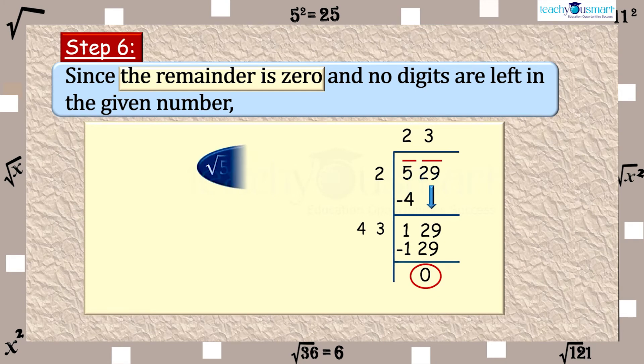Step 6: Since the remainder is 0 and no digits are left in the given number, square root of 529 equals 23.